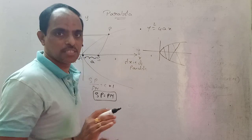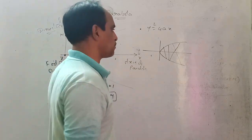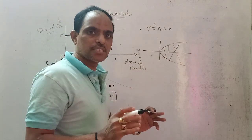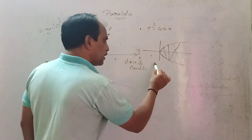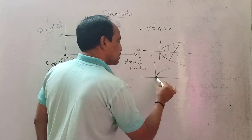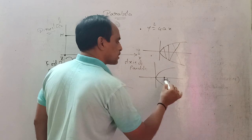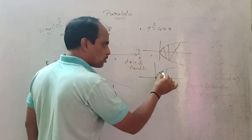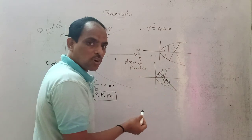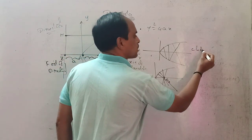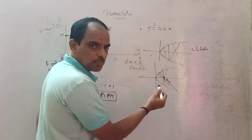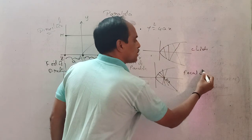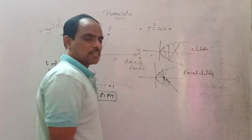By joining any two points on the parabola, the line segment is called a chord — just a chord of the parabola. The chords which pass through the focus are called focal chords.